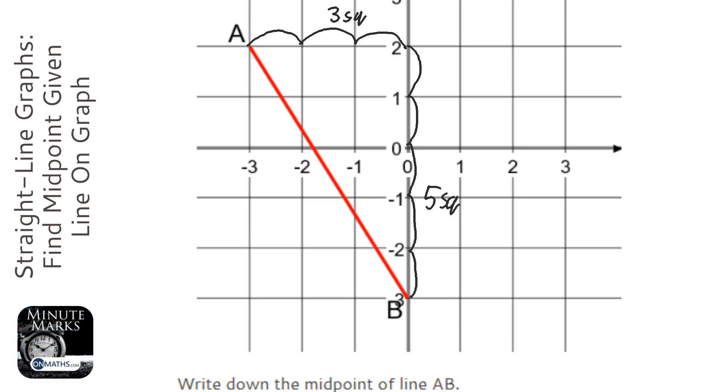Okay, so a midpoint is a halfway point. So instead of jumping 3 squares to the right, we're going to jump 1 and a half squares to the right. Instead of jumping 5 squares down, we're going to jump 2 and a half squares down. And that brings us to this point here. And this is our midpoint.